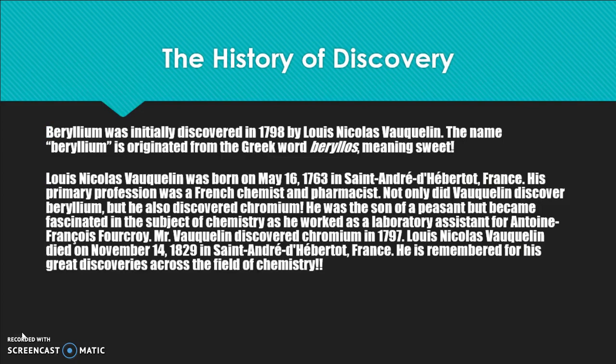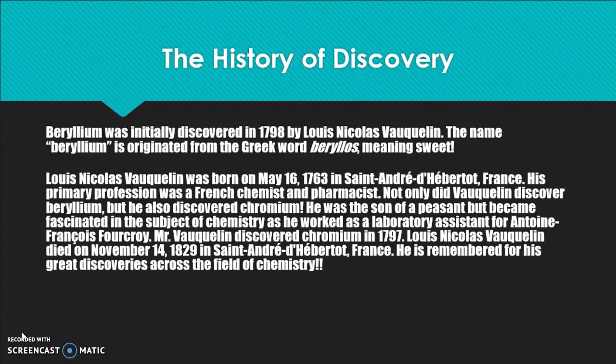The history of discovery. Beryllium was initially discovered in 1798 by Louis Nicolas Vauquelin. The name beryllium originated from the Greek word beryllos, meaning sweet. Louis Nicolas Vauquelin was a French chemist and pharmacist. Not only did he discover beryllium, but he also discovered chromium, which is another element in the periodic table of elements.